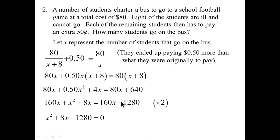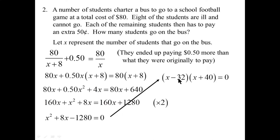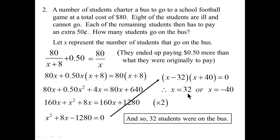So now it's time to factor. Thinking of two numbers that multiply to 1280 and differ by 8: that's 32 and 40. Put them into brackets to hit the target of plus 8, using minus 32 plus 40. That's plus 8. Concluding: x equals 32 or x equals negative 40. Since x represents the number of students on the bus, x can't be negative 40, so x must be 32. There were 32 students on the bus.